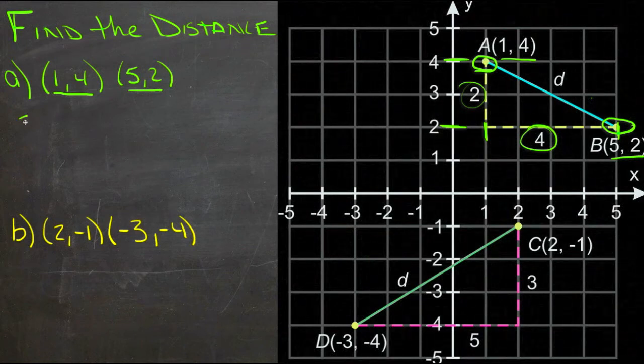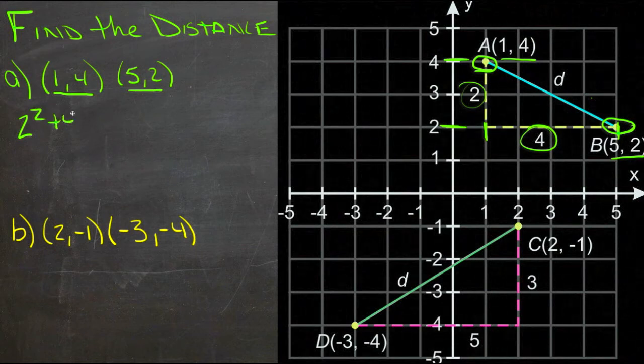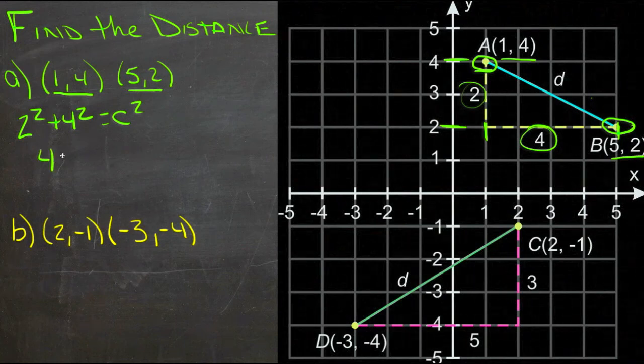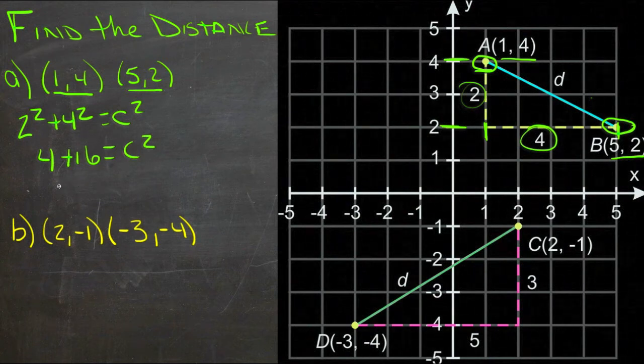So we just use Pythagorean Theorem. We say 2 squared plus 4 squared equals c squared. 2 squared is 4. 4 squared is 16. Equals c squared. So we have 20 equals c squared.